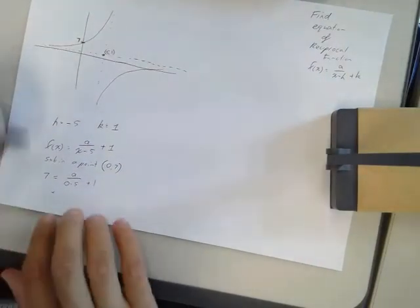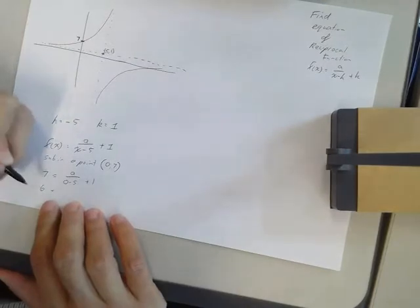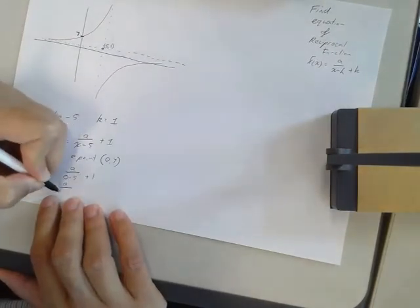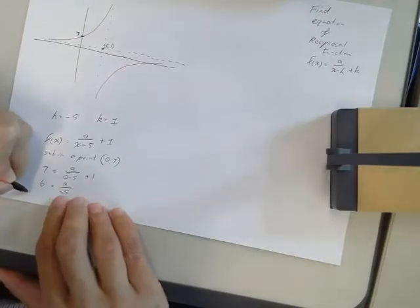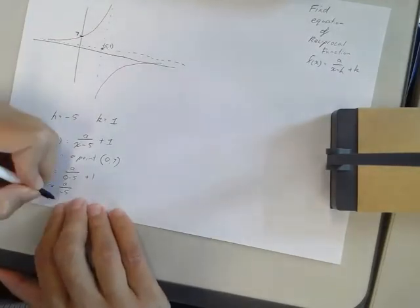Solve that for A, so the plus 1 moves over to here. 7 minus 1 is 6. A on negative 5. That's going to be 6 times negative 5 equals A.